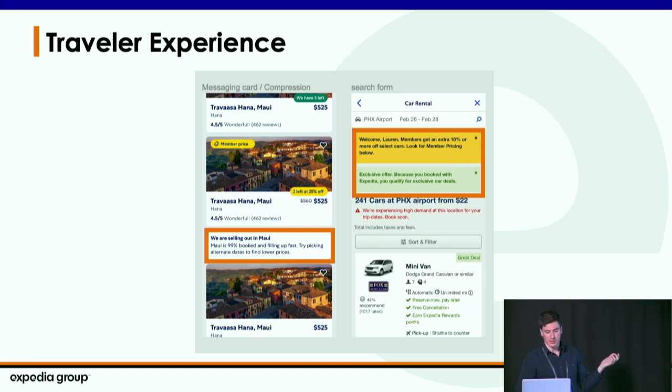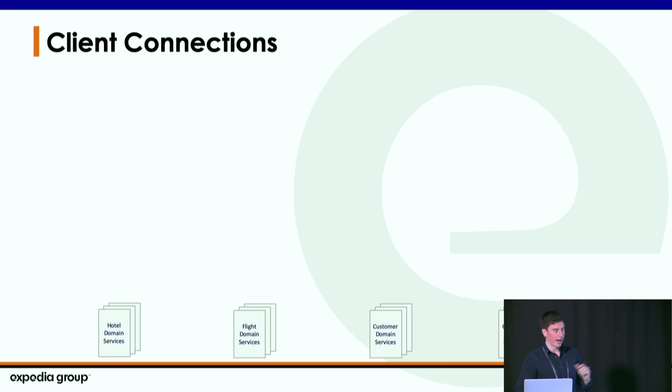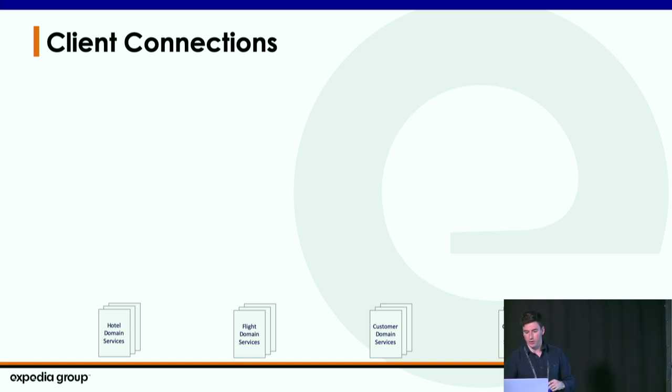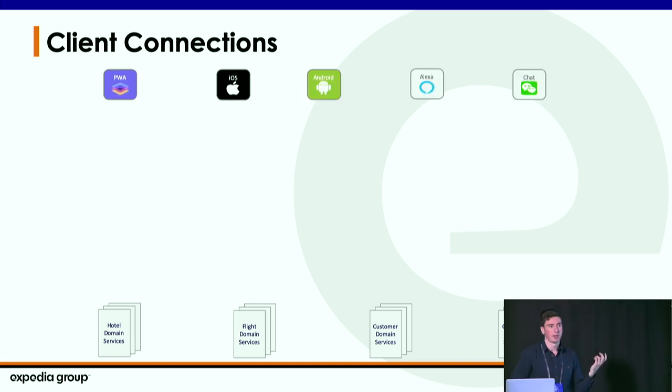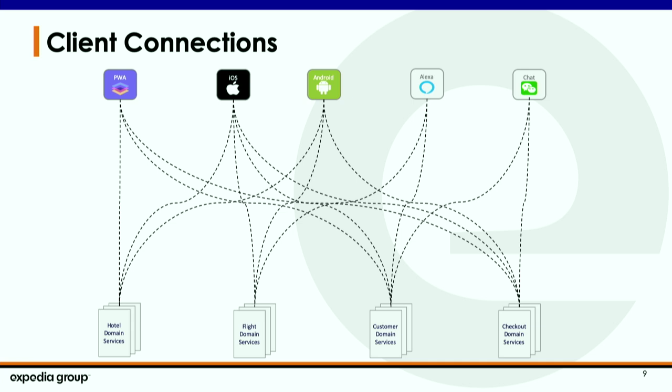How did we get to this state of different experiences? We have different domain teams — hotels, flights, cars — and all the clients at the top: progressive web apps, native apps, Alexa and Google Home chatbots. All the connections between clients have to be managed not only on the clients but also on the service teams. So just like we discussed, we had all these connection points to manage.